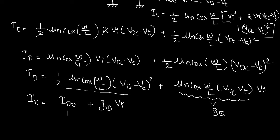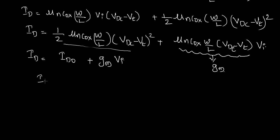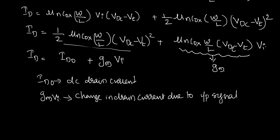Our equation for ID becomes: ID = ID0 + Gm · Vi. Here ID0 is the DC drain current and Gm · Vi is the change in drain current due to the input signal. The total response of the MOSFET is the summation of DC response and AC response. Using the superposition principle, we can analyze the DC response and AC response separately.